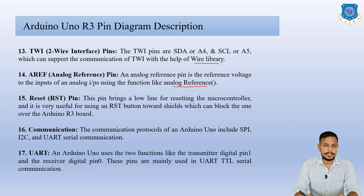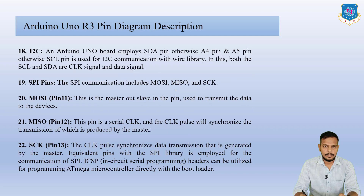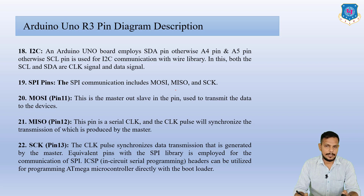For UART, Arduino Uno uses transmitter digital pin 1 and receiver digital pin 0, mainly used for UART TTL serial communication. For I2C, the Uno uses SDA (A4 pin) and SCL (A5 pin) with the Wire library. SPI communication includes MOSI, MISO, and SCK.